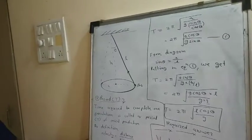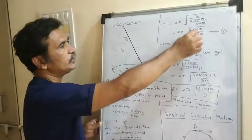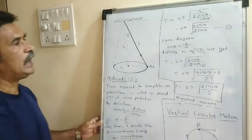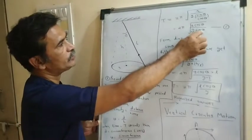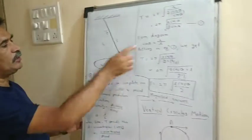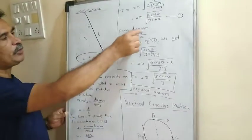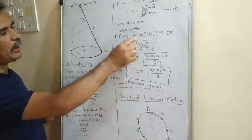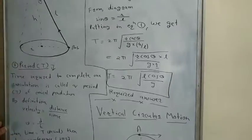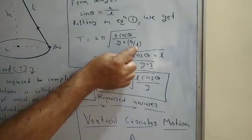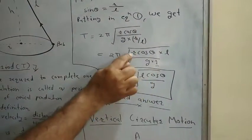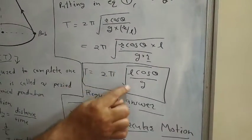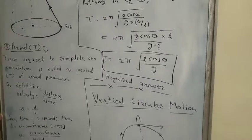Substituting tan θ = (r/l) / cos θ into T = 2π√(r / g·tan θ), we get T = 2π√(r·cos θ / g·sin θ). Since sin θ = r/l, putting this in, r cancels with r, giving us the final answer: T = 2π√(l·cos θ / g).